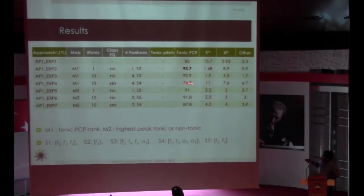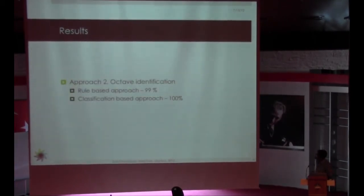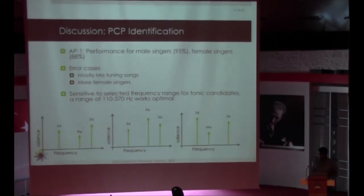These are the results. The highest accuracy we achieved using just a single feature and a single fold, of course. An interesting thing here to see is if we normalize the class, the number of instances per class, we get less accuracy. Because in order to try to learn a data of the minority class, we actually make more confusions in the majority class, and so we end up getting low result for that. These are the type of errors we get. We get mostly either the fifth or the fourth. Instead of identifying the Sa, we identify the Pa or the Ma. For octave identification, we achieve almost 100% accuracy, and even a rule-based approach yields 99% result.